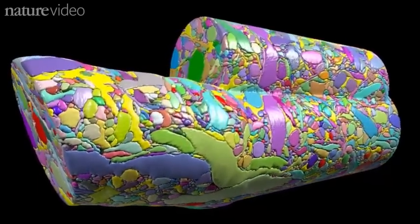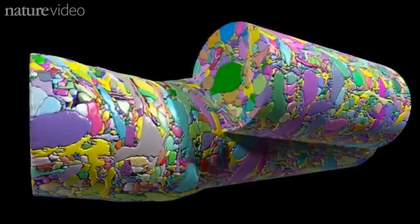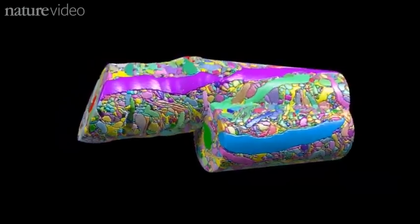This colorful cylinder is a piece of mouse brain. A very small piece. It's two hundredths of a millimeter long.